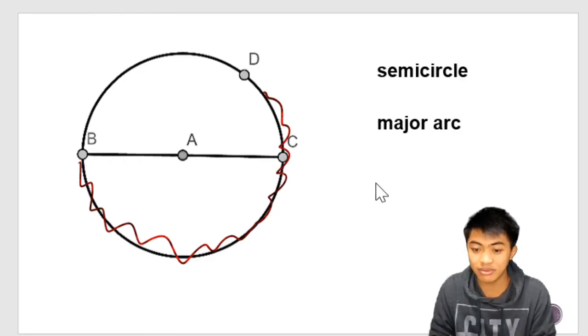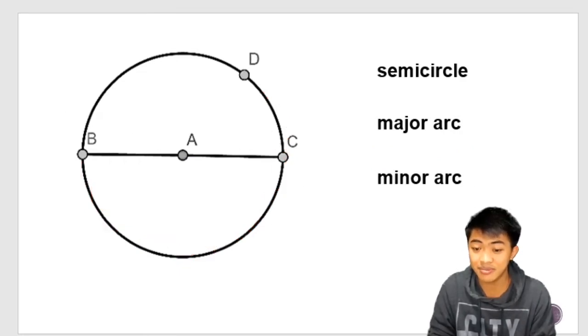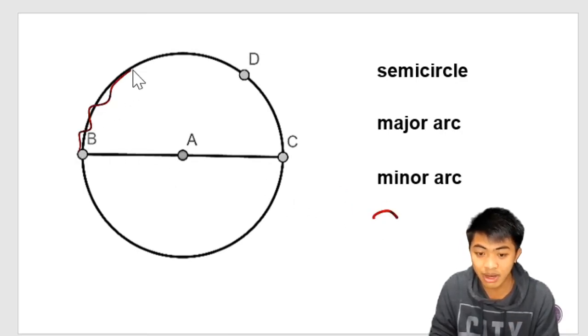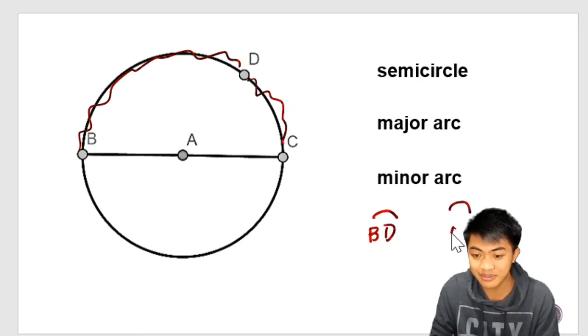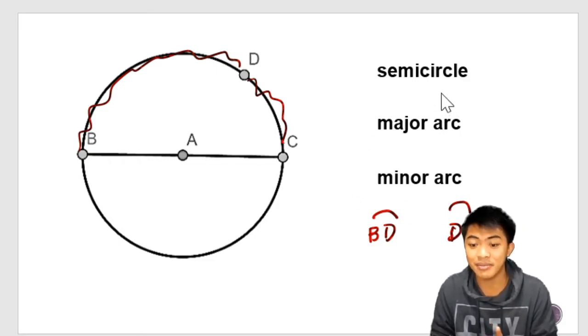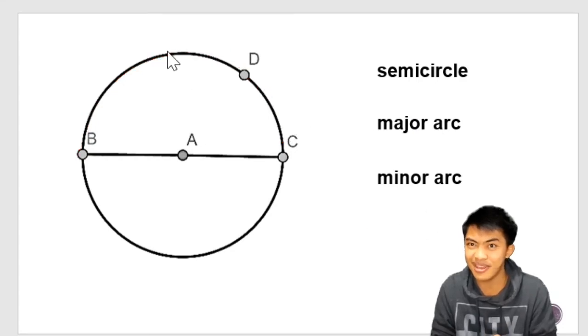And we do have another, which is the minor arc. And minor arcs are smaller than semicircle. So in this figure, I can see two minor arcs. And they are arc BD and arc DC. Okay. So those are semicircle, major arc, and minor arc. Now let's proceed to the angles.